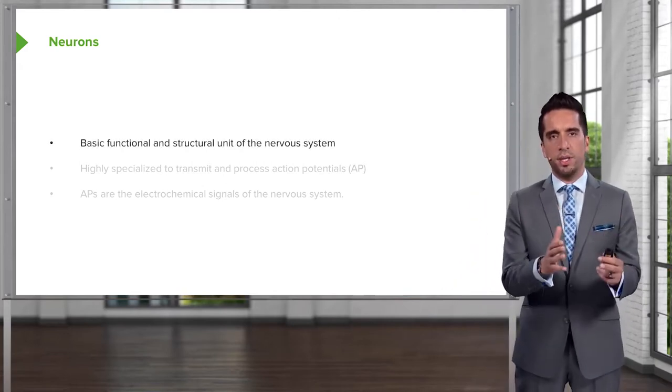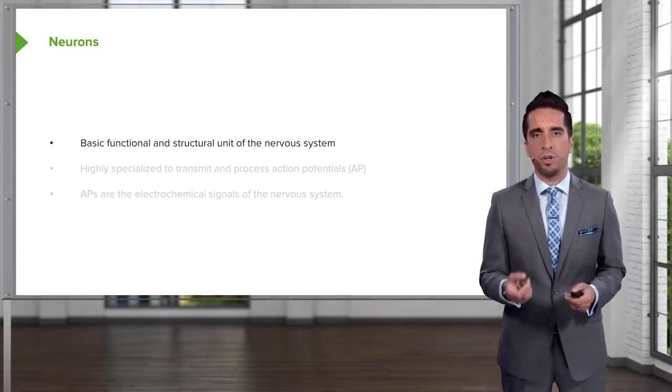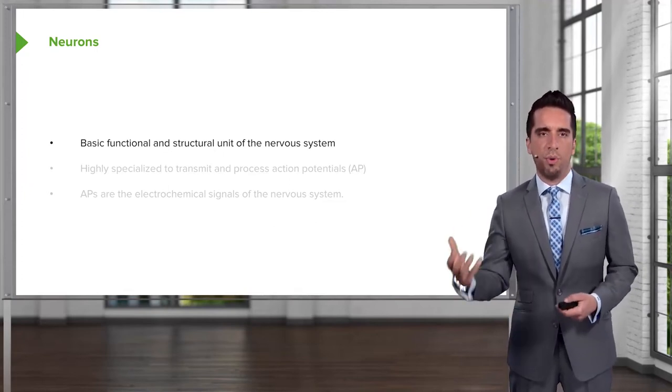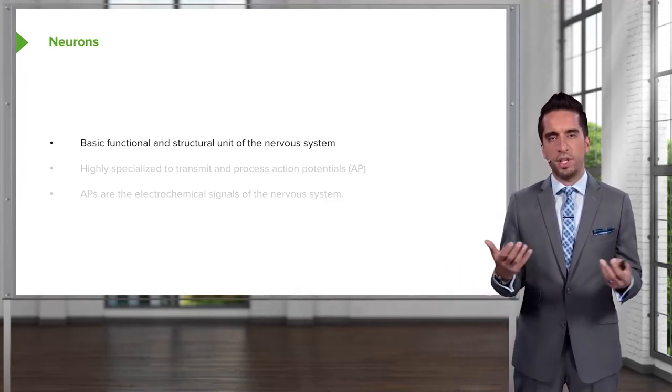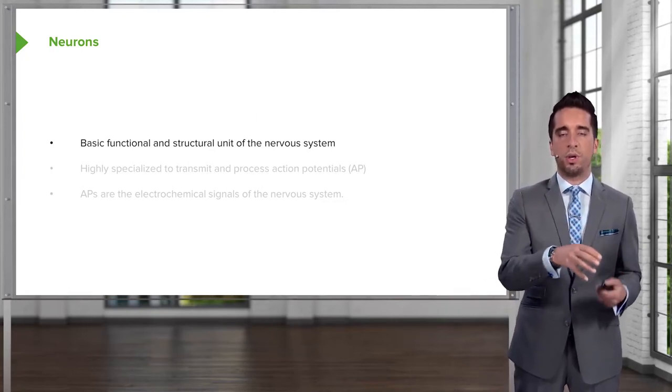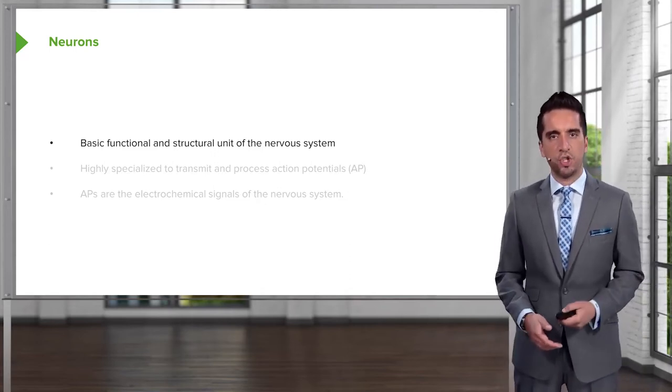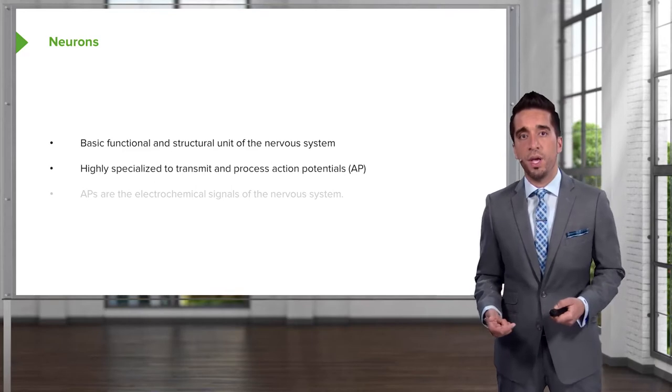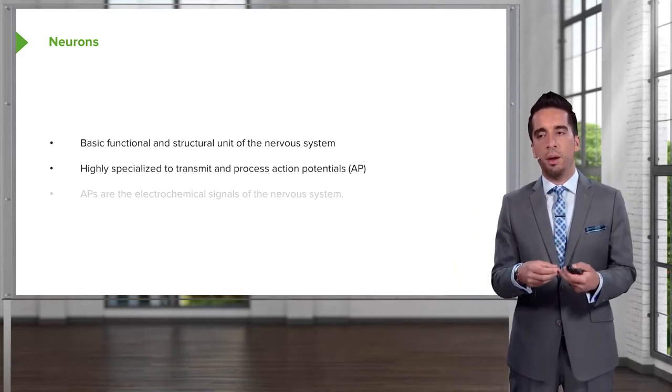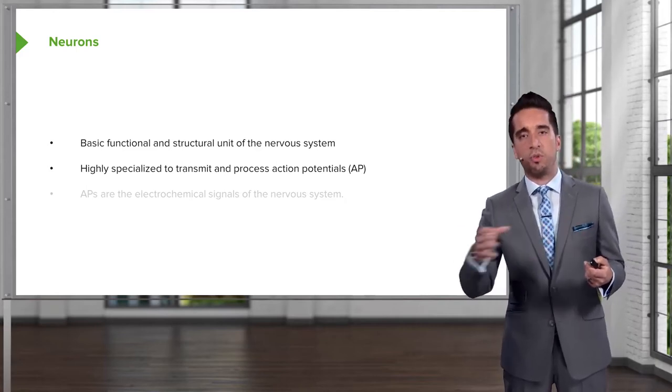So the basic unit in our brains, really in our body, would be the neuron. The term that's used sort of analogously is a cell. So when you hear the term brain cell or neuron, they're essentially the same thing. And these brain cells or neurons in general can be specialized based on where they're located. So they're the basic functional and structural unit of the nervous system. Each one is highly specialized to transmit and process information, and that's done through the process of action potentials and synaptic transmission.